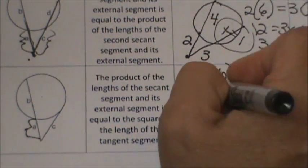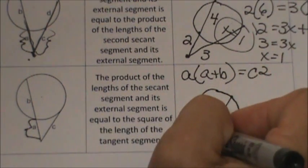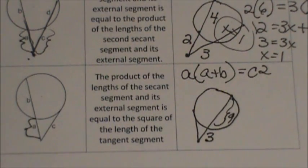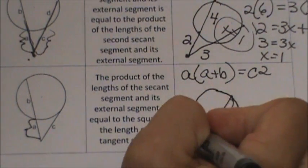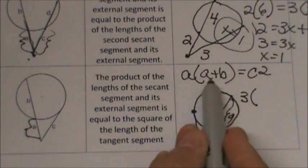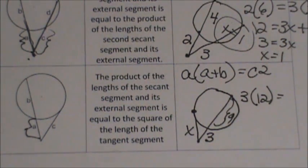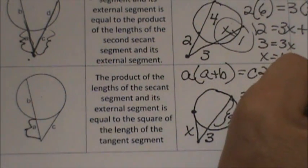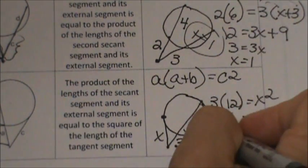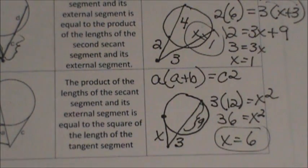Let's try an example with a tangent and a secant. The outside part is 3 and the inside part is 9, so the whole secant is 3 plus 9 equals 12. Setting 3 times 12 equal to x squared gives 36 equals x squared. Solving, x equals positive or negative 6, but we discard the negative since we can't have a negative length, so x equals 6.